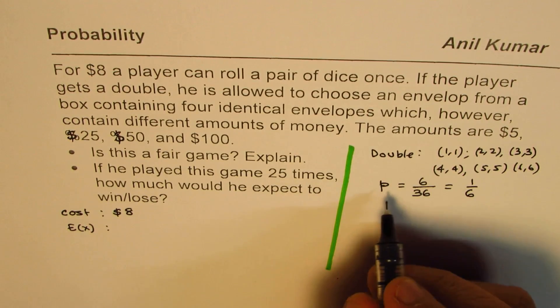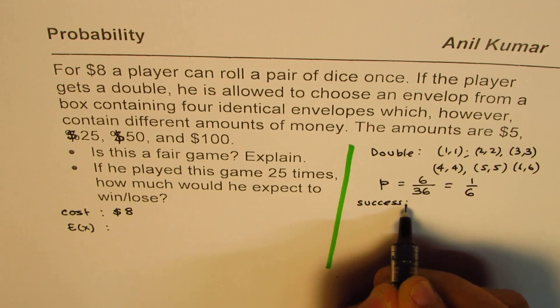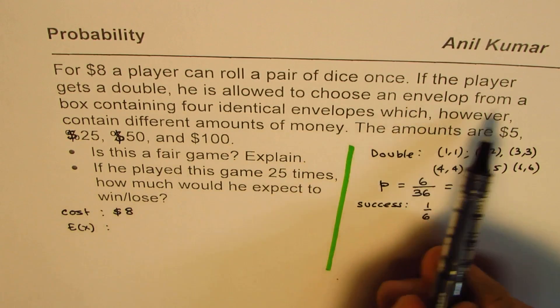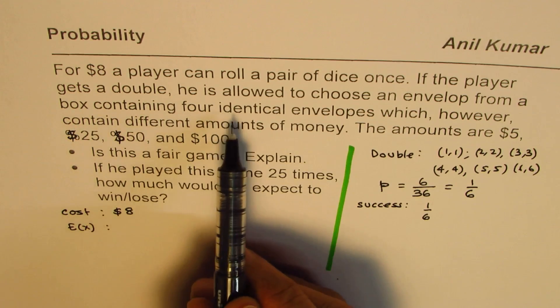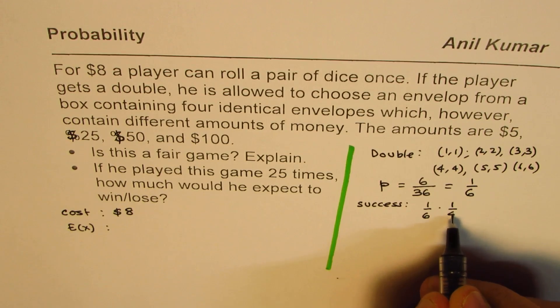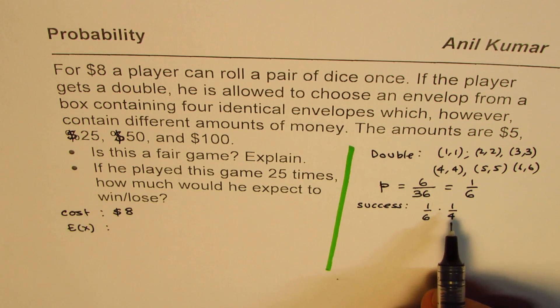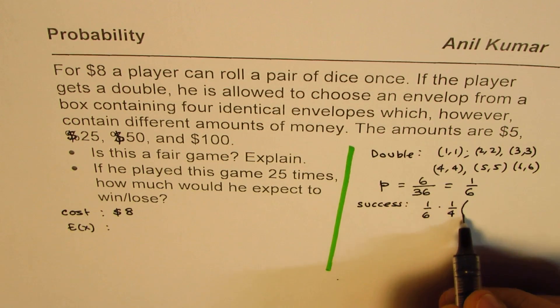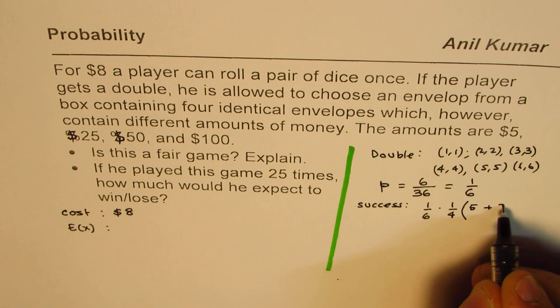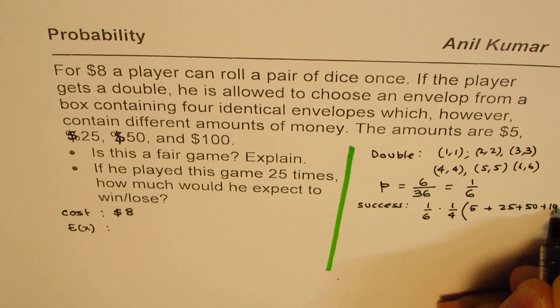So for a success here, success is 1 out of 6. In that case, box containing 4 identical envelopes, so 1 fourth is picking up, because there are 4 different envelopes. So 1 fourth is picking up one of those. Which one of those? They have different amounts. So the amounts are 5, we are just adding them up: 25 plus 50 plus 100.